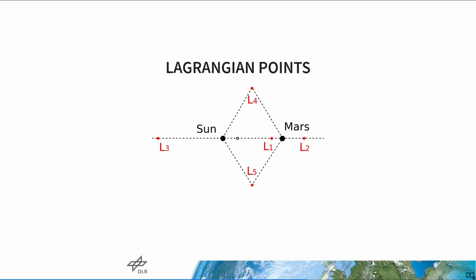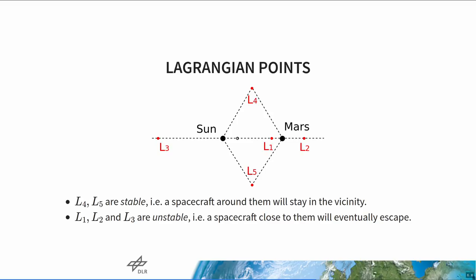Mathematicians and physicists will immediately ask what happens if you put a spacecraft close to a Lagrangian point. This is related to stability. Around L4 and L5, the spacecraft will actually stay in the vicinity — it will essentially rotate around the Lagrangian points, so those are called stable. L1, L2, and L3 are actually unstable, meaning a spacecraft there will eventually escape. However, this takes different amounts of time: close to L2 it might take a few months, but close to L3 it could take something like a hundred years.